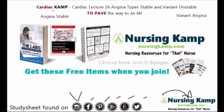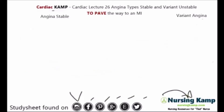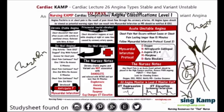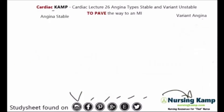Hello nurses, this is Kevin with nursingcamp.com and these are my scribble notes on nursing and the NCLEX. This is cardiac lecture number 26: angina types — stable, variant, and unstable — and acute coronary syndrome. We can also be found on Instagram, Facebook, and Pinterest.